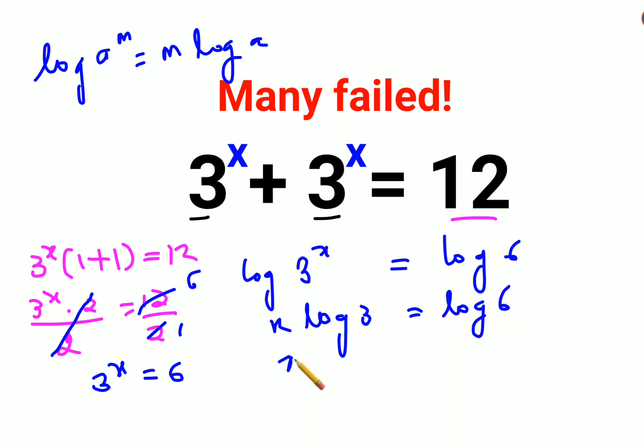So now value of x can be done as: you divide both sides by log 3. So this will get cancelled. So value of x comes out to be log 6 upon log 3.